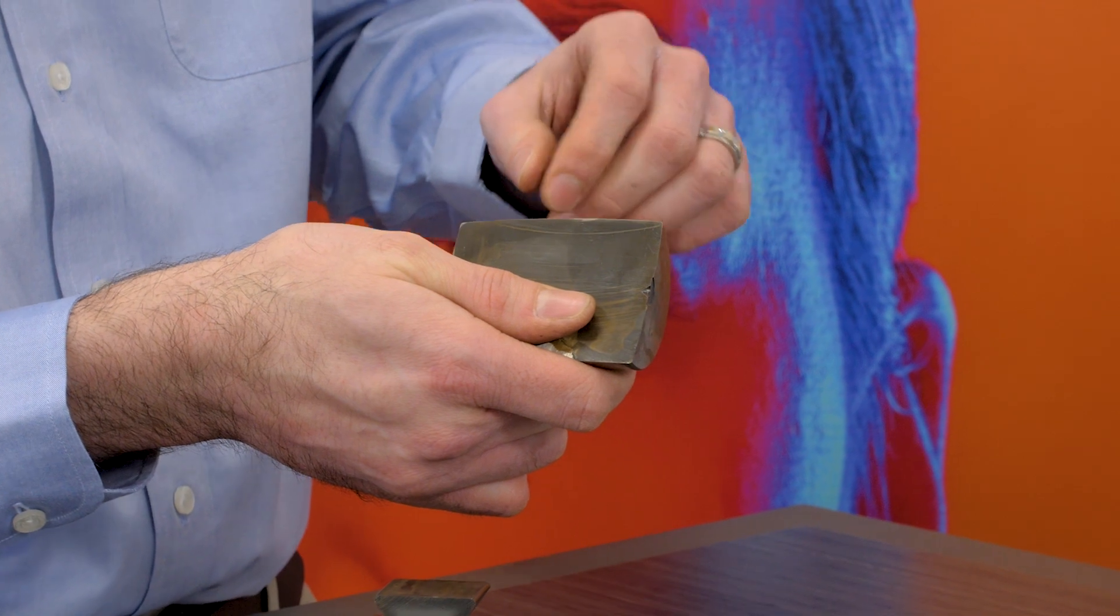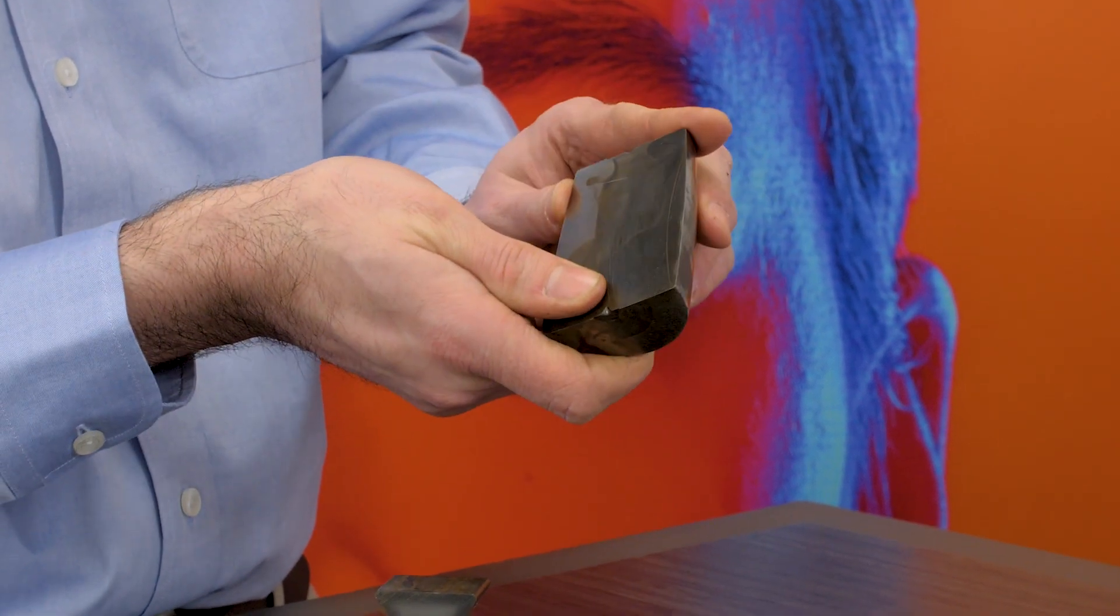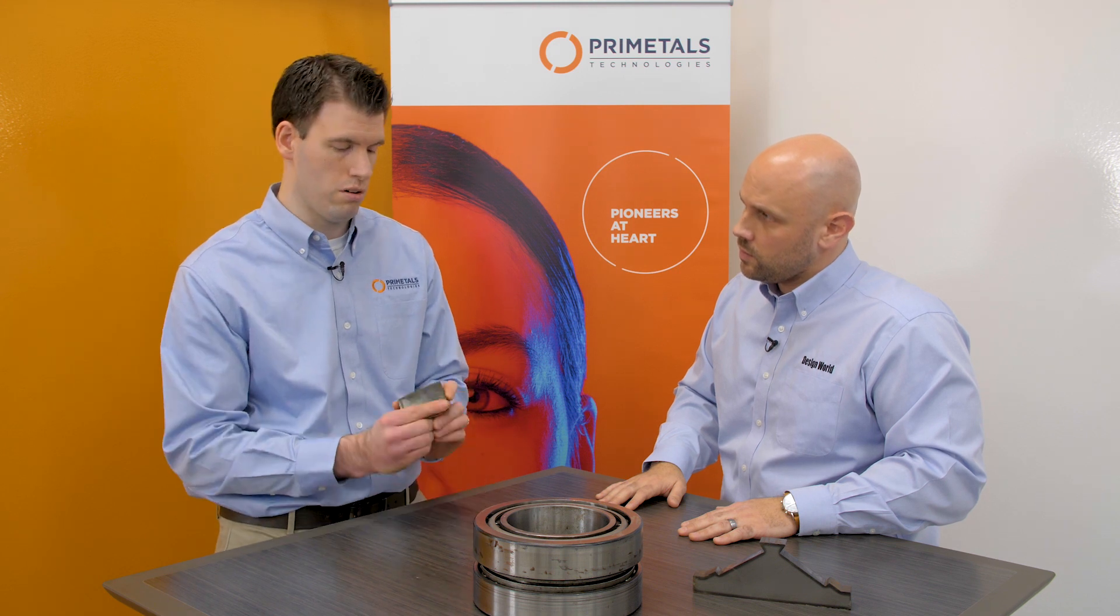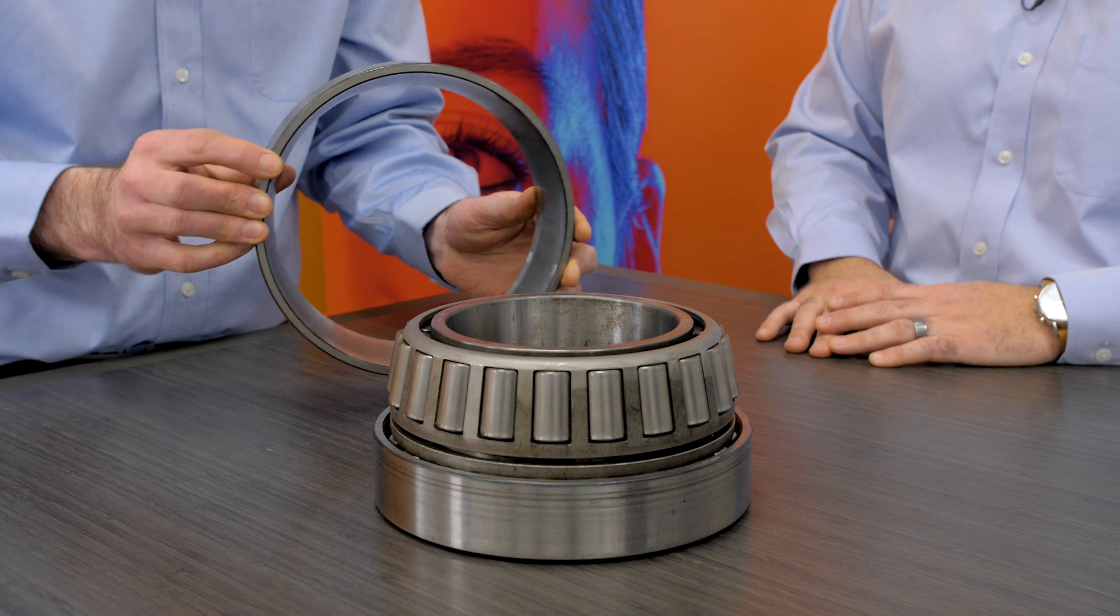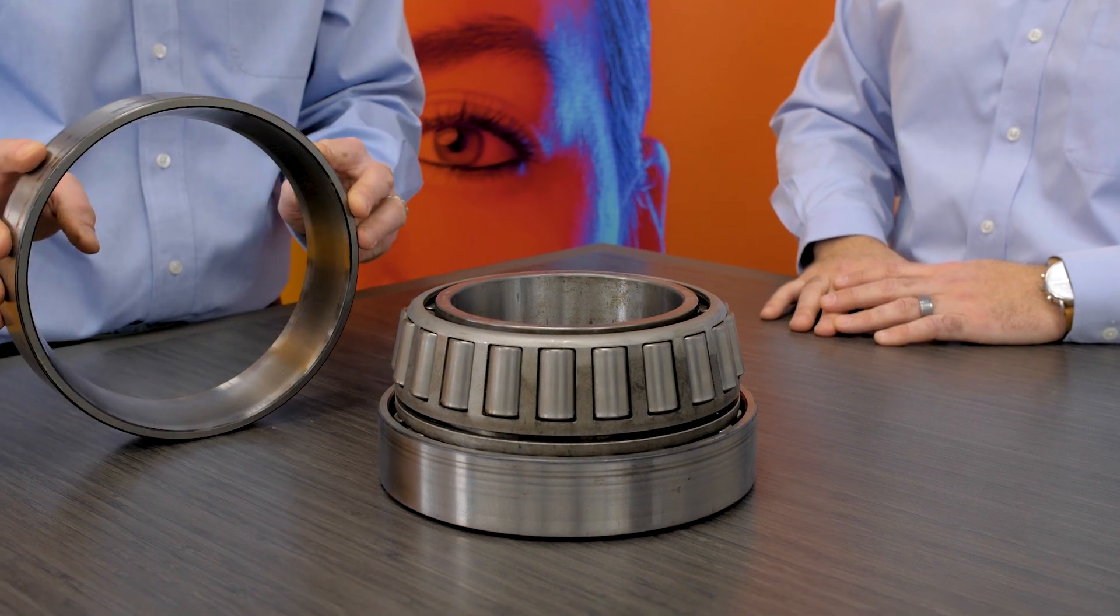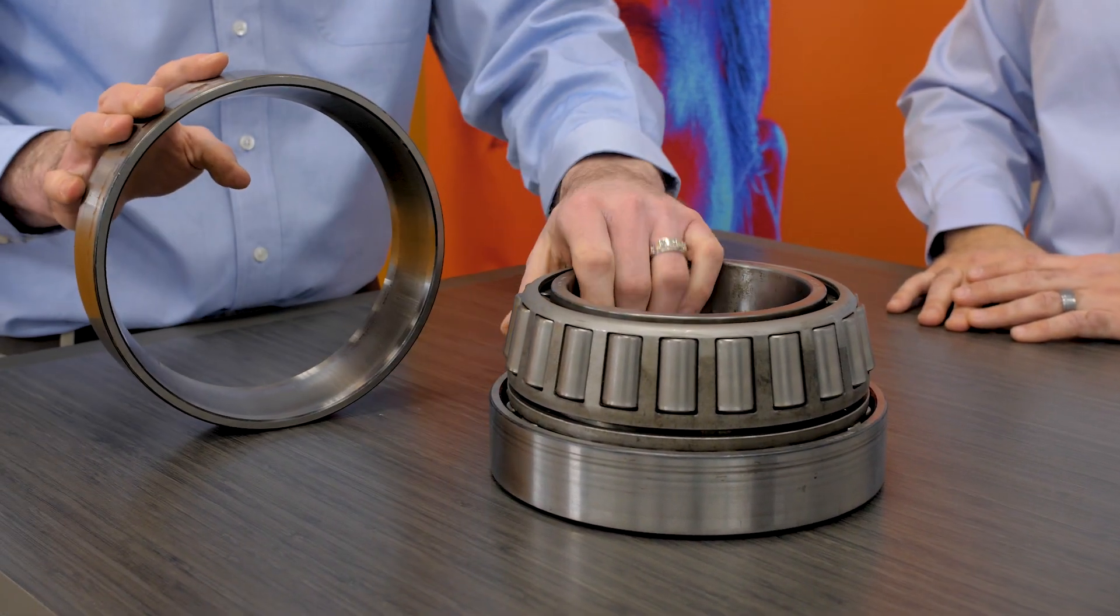Now, you'll lose a couple points of hardness from the outside to the very center, but basically all your cylindrical, your spherical bearings are this material here. And what's interesting about this is the reason why you use this for a tapered roller bearing application.